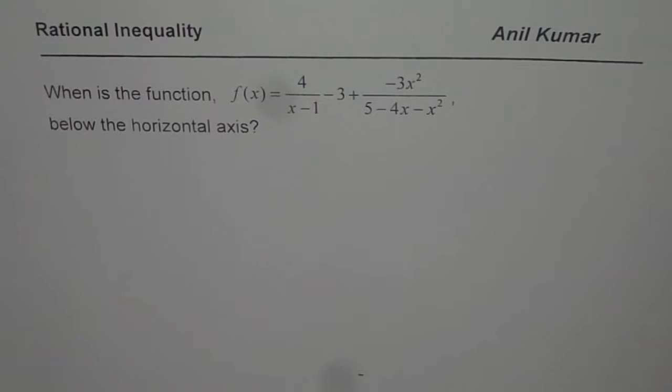I am Anil Kumar and we will discuss rational inequalities with the help of a very interesting question. The question here is, when is the function f(x) equals 4 over x minus 1 minus 3 plus minus 3x squared divided by 5 minus 4x minus x squared below the horizontal axis?